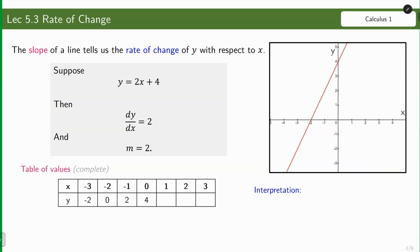We have here the following table of values for y is equal to 2x plus 4. Here we have increasing values of x by one unit, and the following values for y. What do we notice about the differences between the values of y? We have 2, and then 2, and another 2.